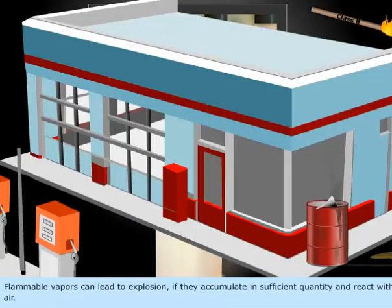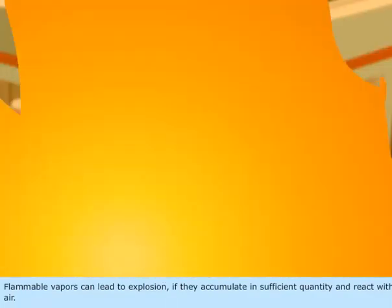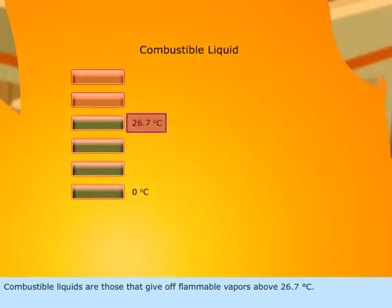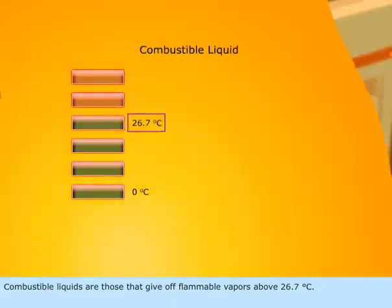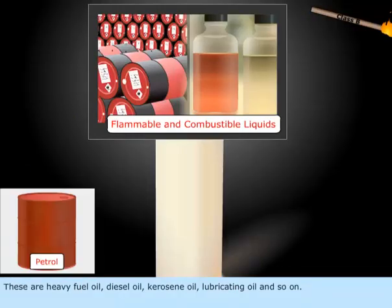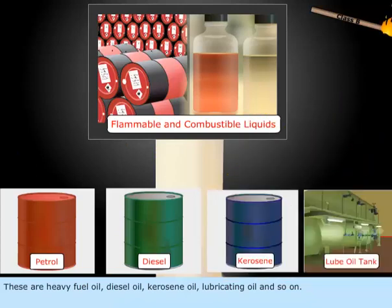Flammable vapors can lead to explosion if they accumulate in sufficient quantity and react with air. Combustible liquids are those that give off flammable vapors above 26.7 degrees Celsius. These are heavy fuel oil, diesel oil, kerosene oil, lubricating oil, and so on.